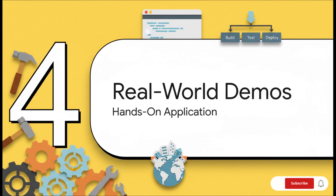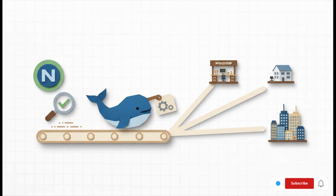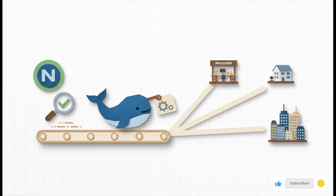Theory is great, but nothing beats getting your hands dirty on complete real-world projects — that's where knowledge actually sticks and confidence skyrockets. Picture this: you take a standard Node.js app and build a complete CI/CD pipeline for it completely from scratch. We're not talking about a simple hello world example. We're talking about a pipeline that automatically runs tests on every single commit, builds a properly versioned Docker image, and then deploys it through multiple environments — from a staging server for testing all the way to the production environment your actual users see.